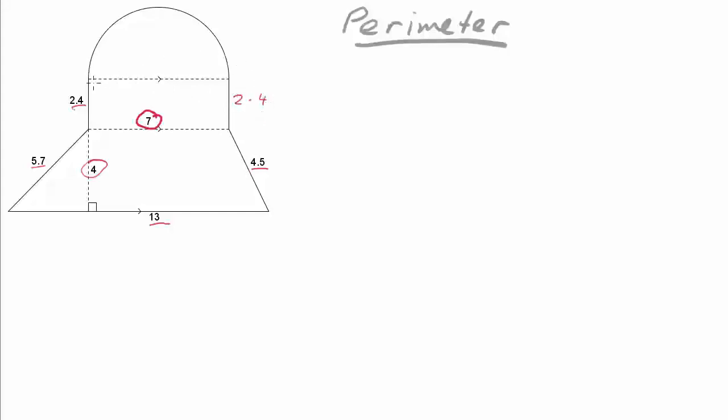And the other part that we don't know is this distance around the outside. Now that is half of a circle or a semicircle, which we'll need to calculate before we can add the perimeter up.